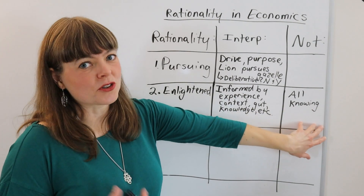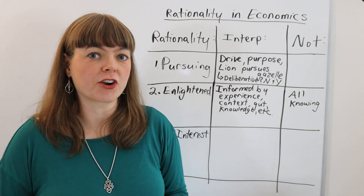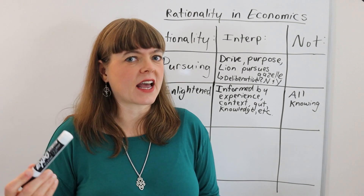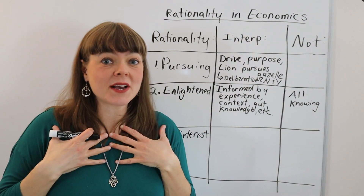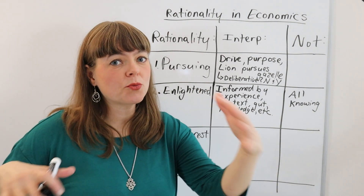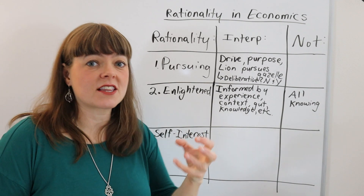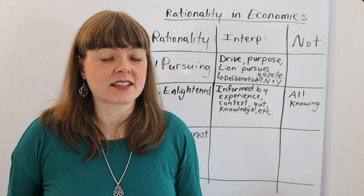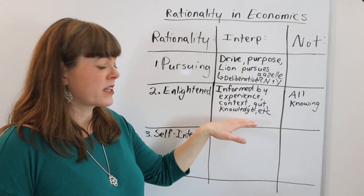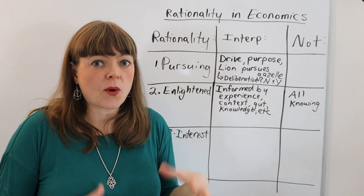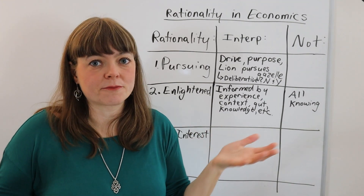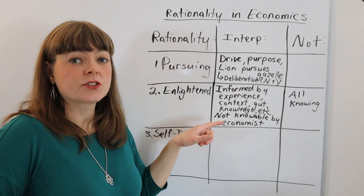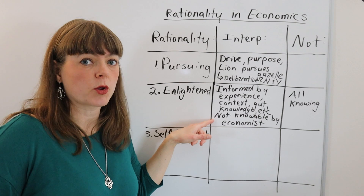Enlightened does not mean all-knowing — that's obviously not what it means if we're talking about human behavior. But the word enlightened has this element to it. Why are we using the word enlightened? I think it's a call to humility. It's a call to recognize that if you as the economist are a system designer thinking about how to design systems optimally, you have to acknowledge that the people inside the systems you're designing have access to experience and knowledge that you do not have access to. You cannot have access to their full set of relationships, context, knowledge, and experiences. So this enlightened part is not fully knowable by an economist.